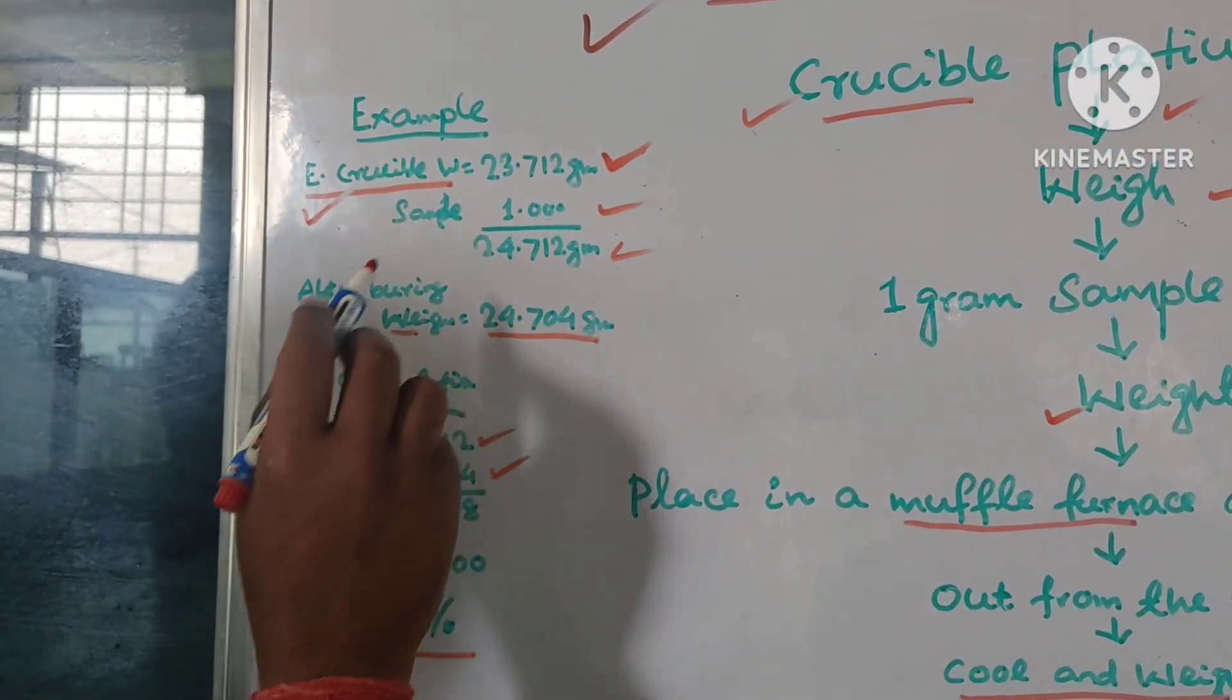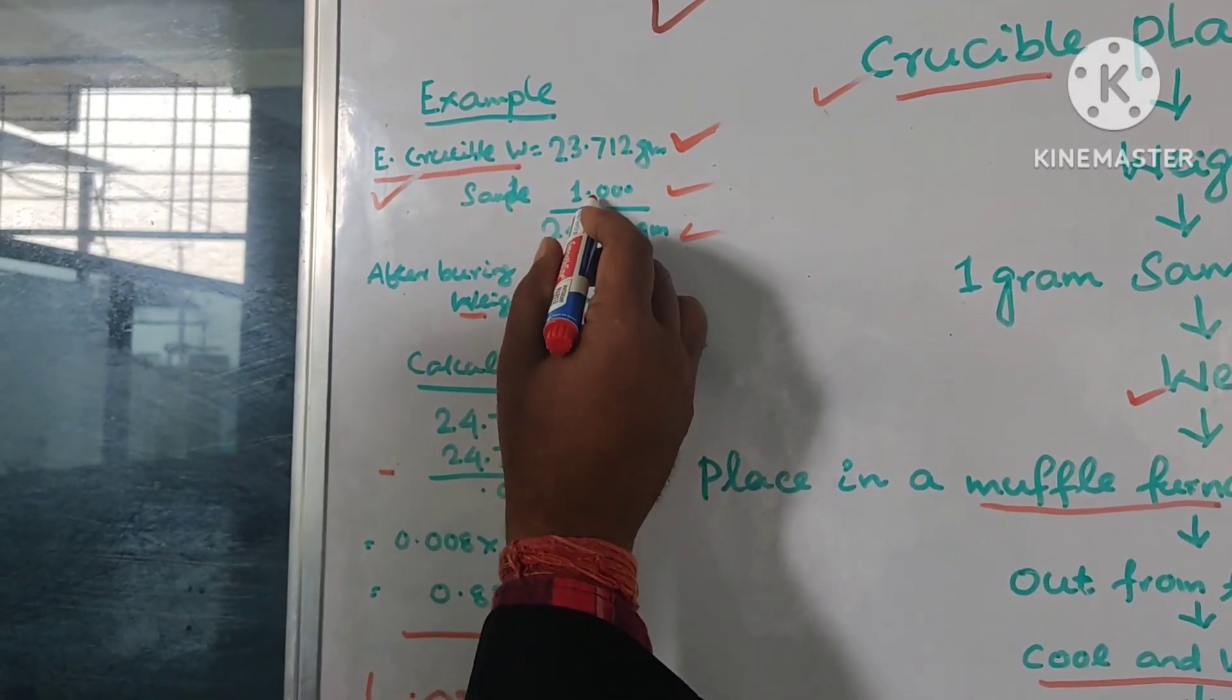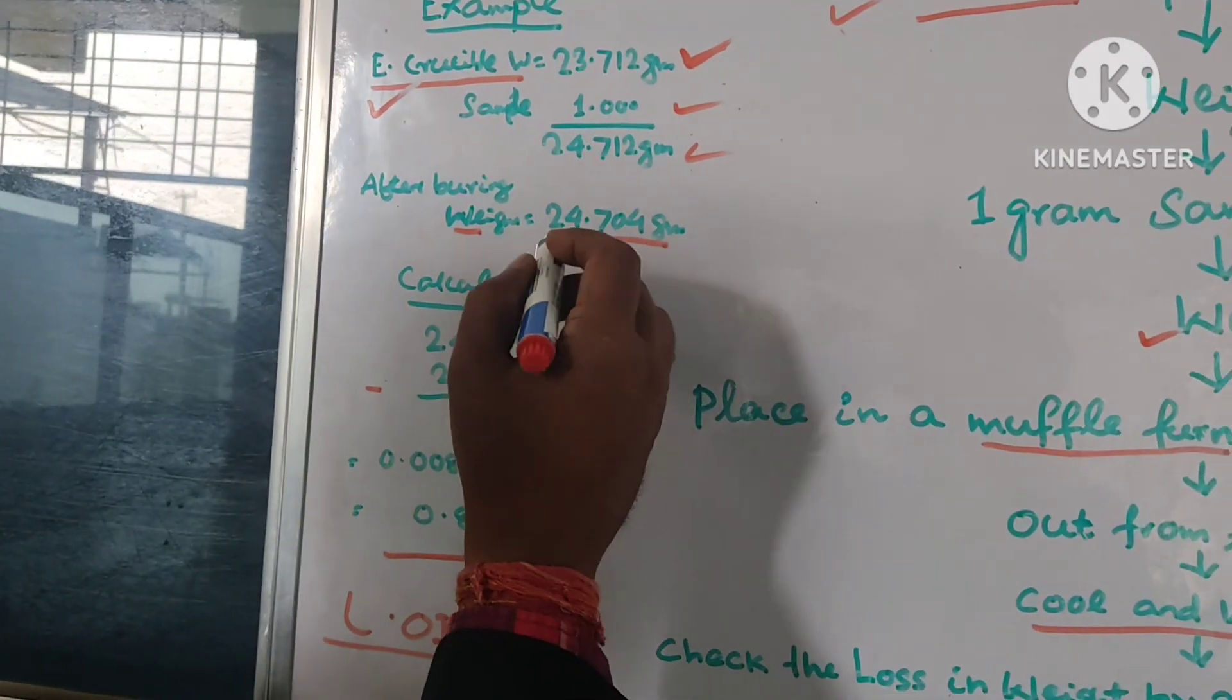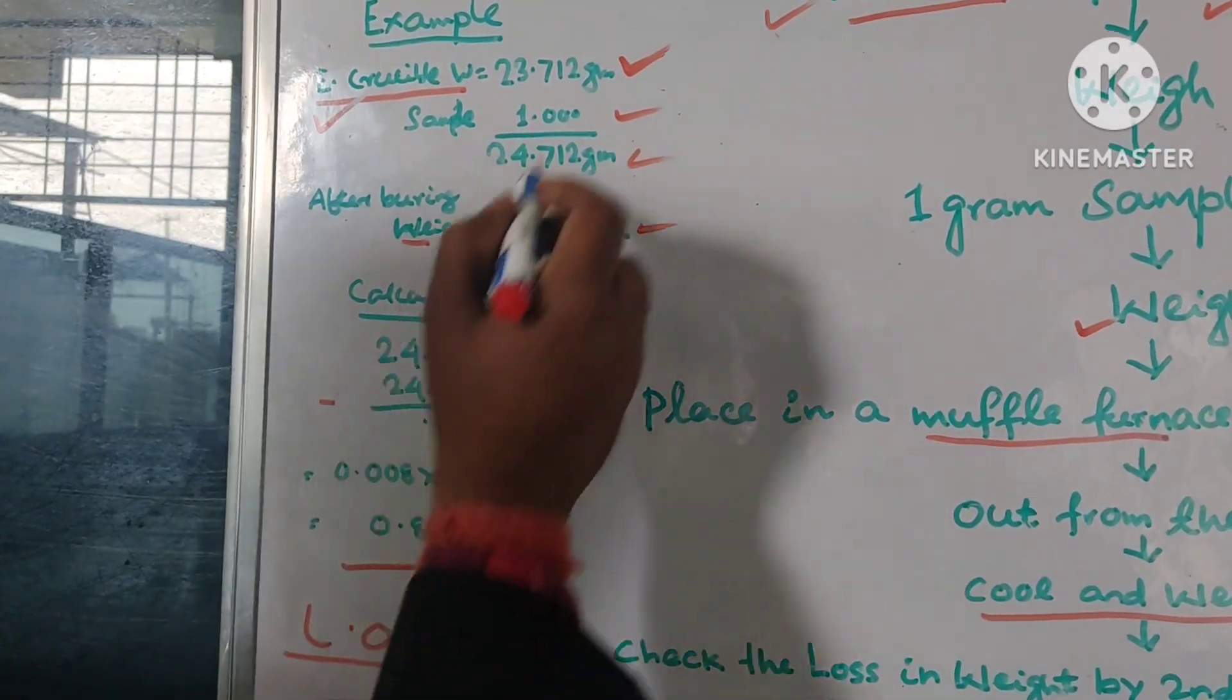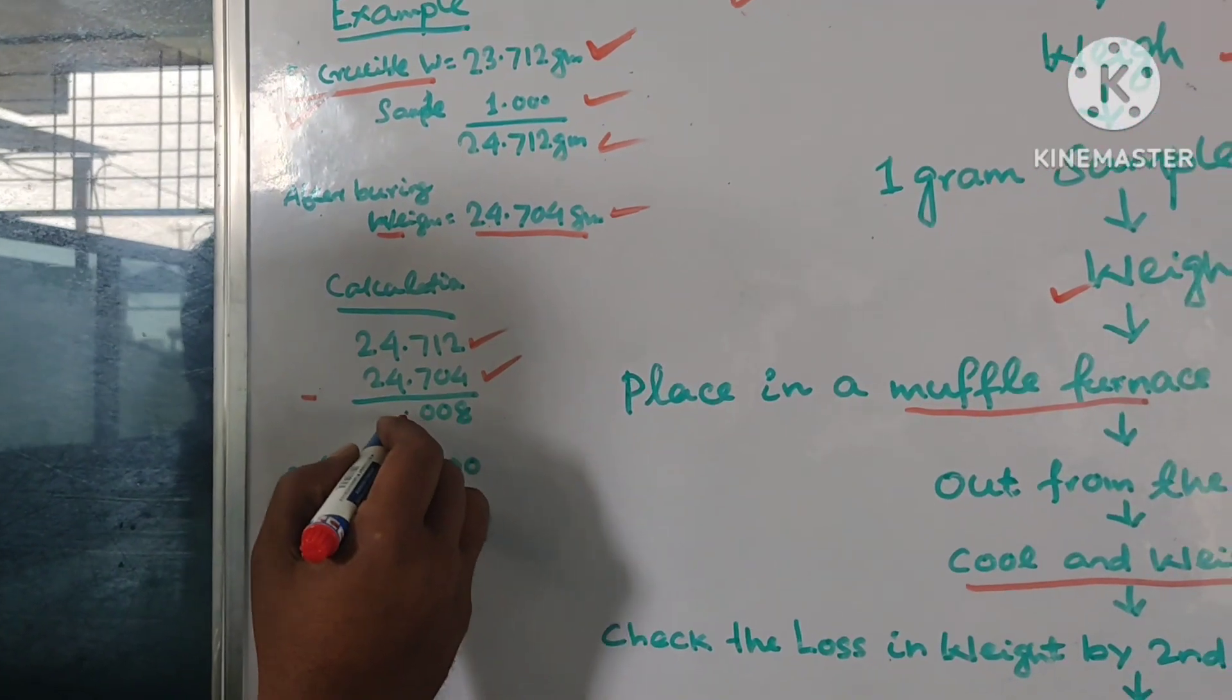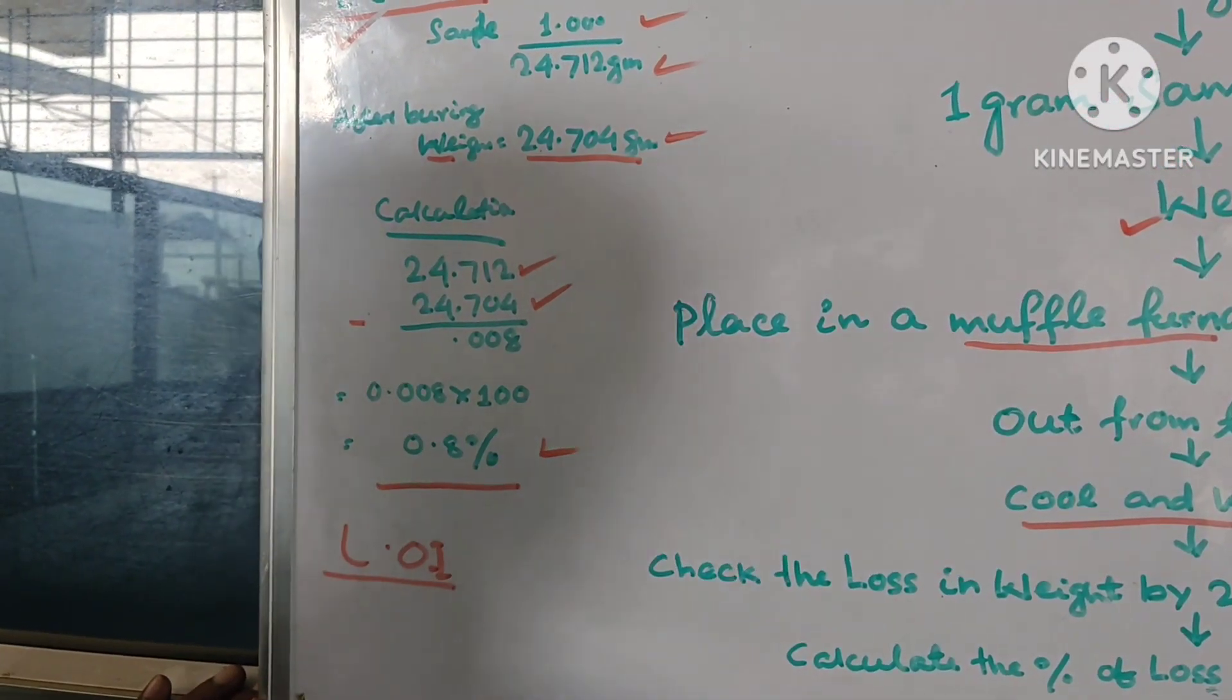And when contain one gram sample, we can take cement or clinker. So sample with one gram add, then weight 24.712 gram. After burning, when the crucible after burning weight, 24.704 gram. So calculation, 24.712 before and after burning 24.704, when we minus them, net what will be 0.008 gram. So 0.008 into 100, so what, 0.8 percent. It is the LOI.